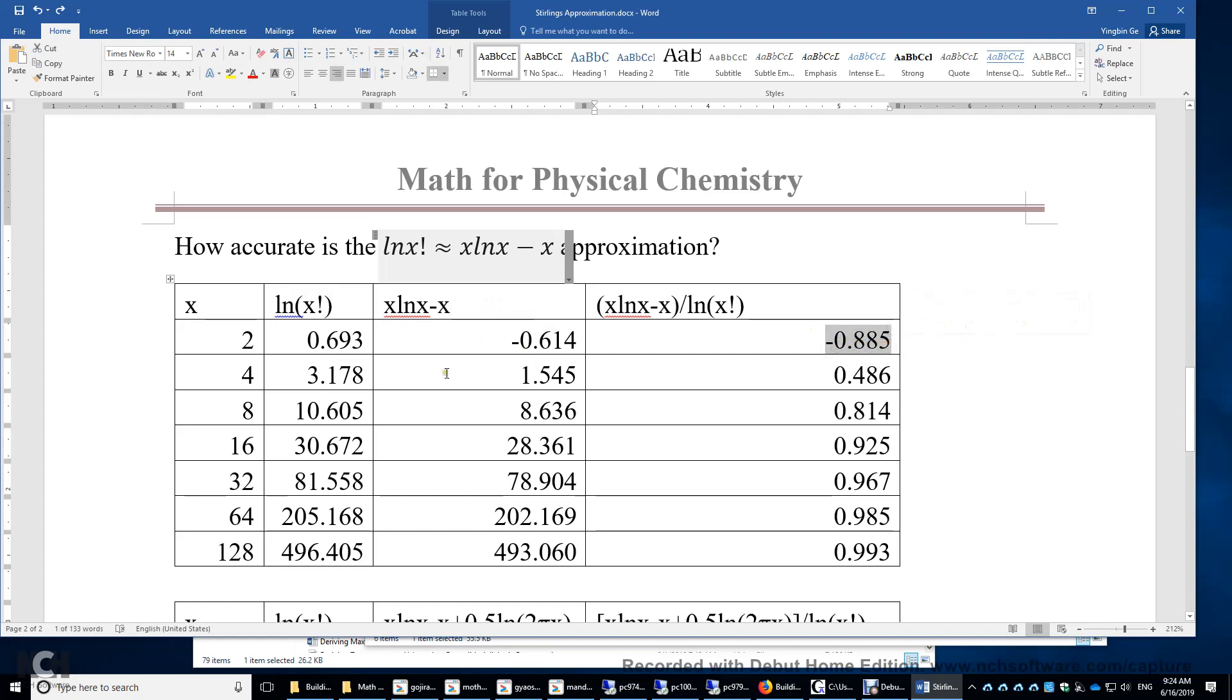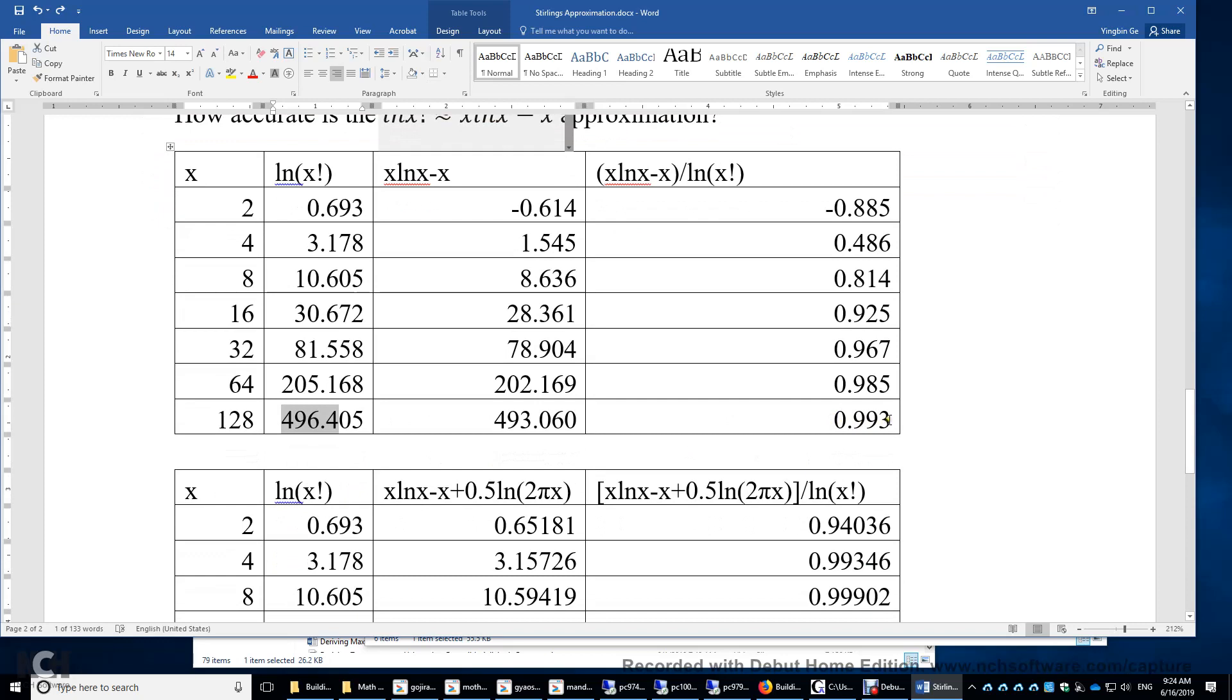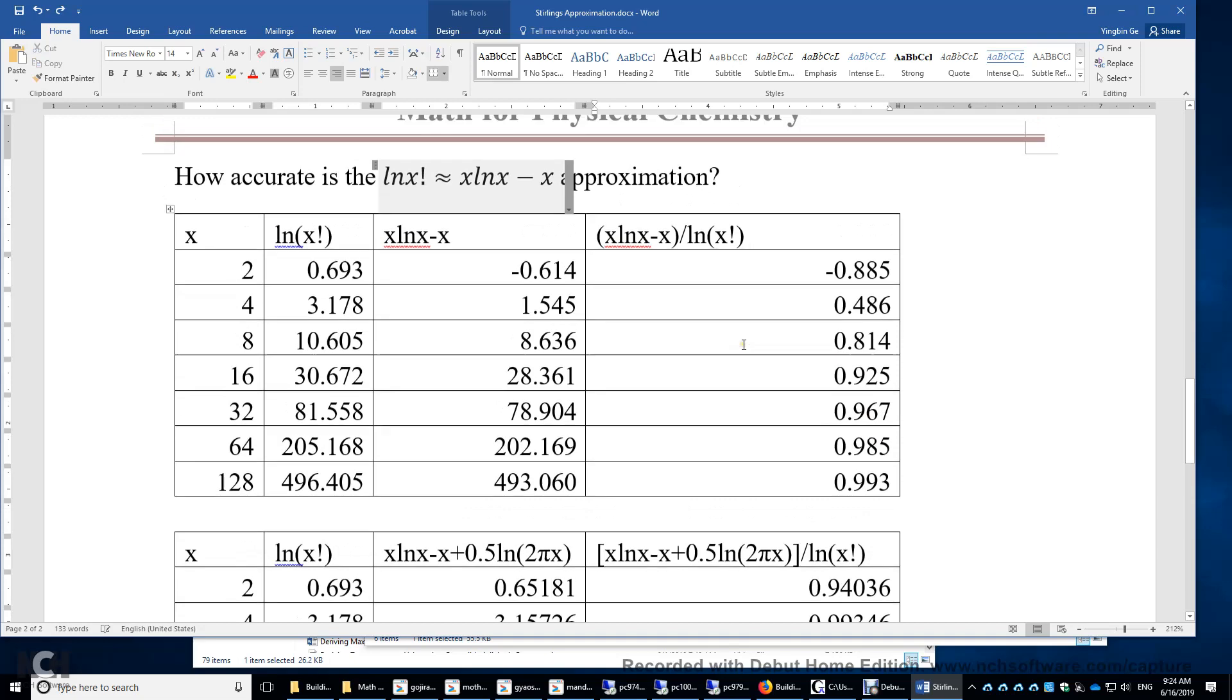When x equals 4, it's getting better. The ratio is nearly 50%. And then when x equals 8, we have a much better approximation. So the percent error is less than 20%. And then when x equals 16, we are approaching 1. So this is 0.925 already. When x equals 128, you can see the ratio between the approximation and the exact value becomes 0.993. The error of percent is less than 1 percentage point.